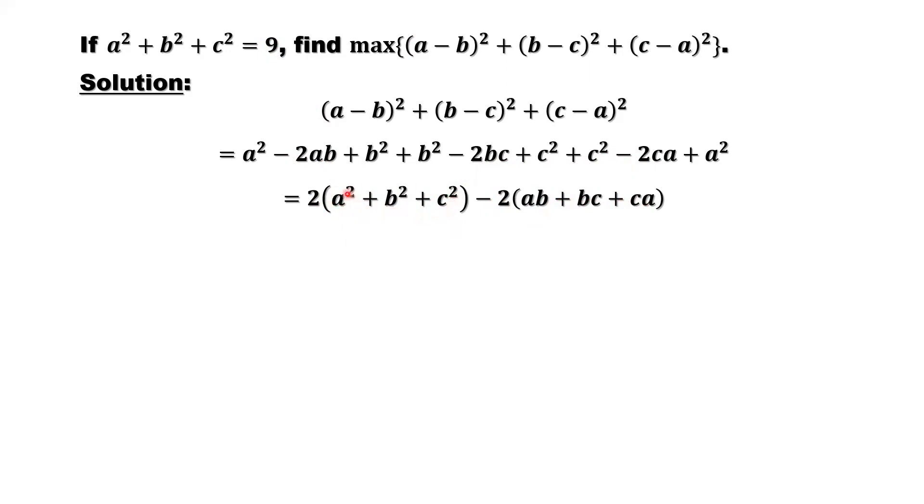So replace this by 9. 2 times 9 is 18. So here we summarize the result: This equals 18 minus 2 times (ab plus bc plus ca).